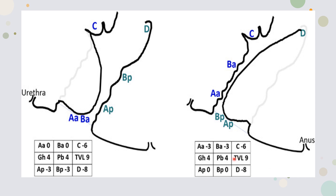In Grid 2: Aa is minus 3 and Ba is minus 3 — both at their fixed positions. Cervix is at minus 6, well supported. Genital hiatus 4 centimeters, perineal body 4 centimeters, total vaginal length 9 centimeters — the middle grid is also normal. Ap is at zero and Bp is also at zero — both posterior vaginal wall markings have come down to the level of the hymen. Pouch of Douglas is minus 8, at its normal position.